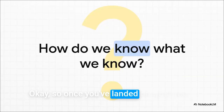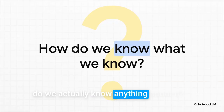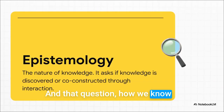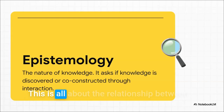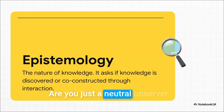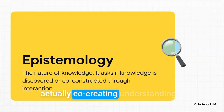Once you've landed on what you think reality is, the next logical step is: how do we actually know anything about it? How does knowledge even happen? That question — how we know what we know — is called epistemology. This is all about the relationship between you, the researcher, and the knowledge itself. Are you just a neutral observer, discovering facts that already exist? Or are you an active participant, actually co-creating understanding with the people you're studying?